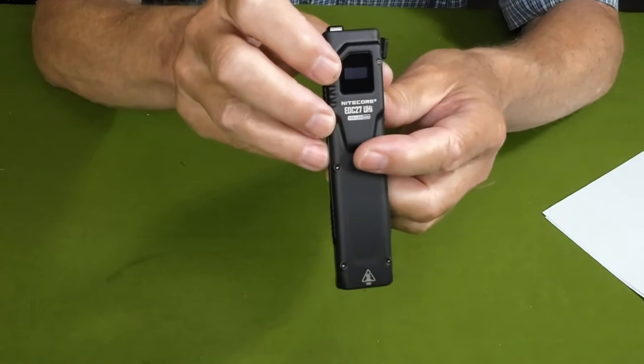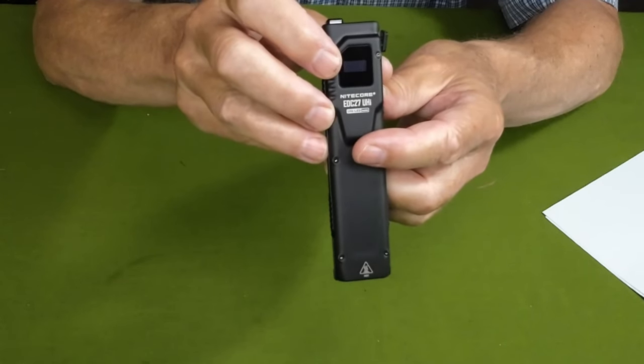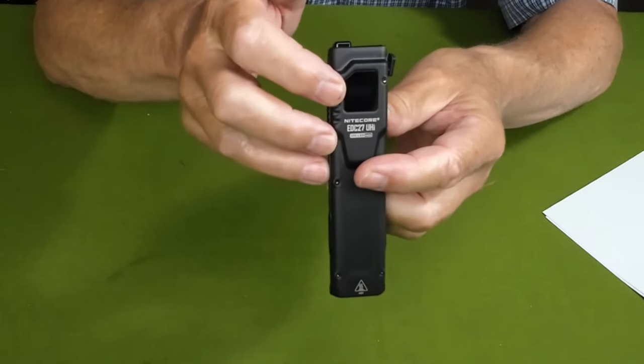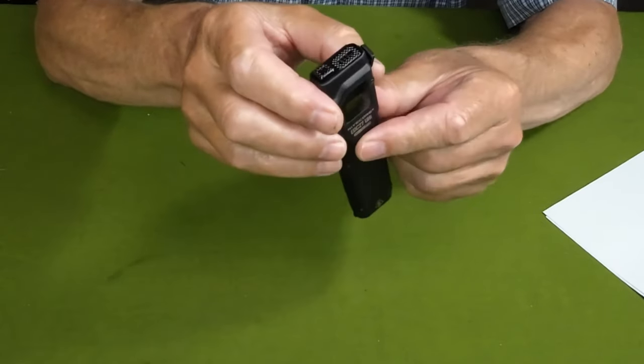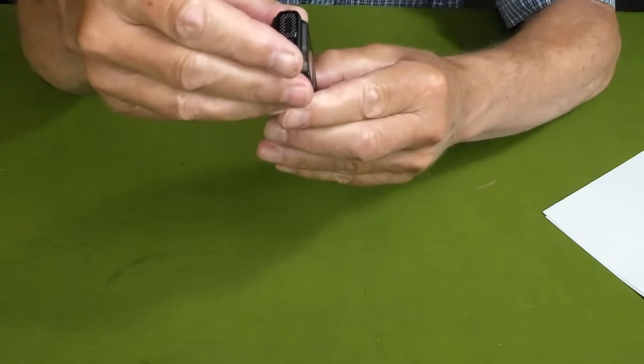Here is the LED display on the outside to show you everything that's going on with the light. It's great for checking your battery status, but I don't necessarily use it for anything else. Let's talk about the operation of the light and we'll get going.